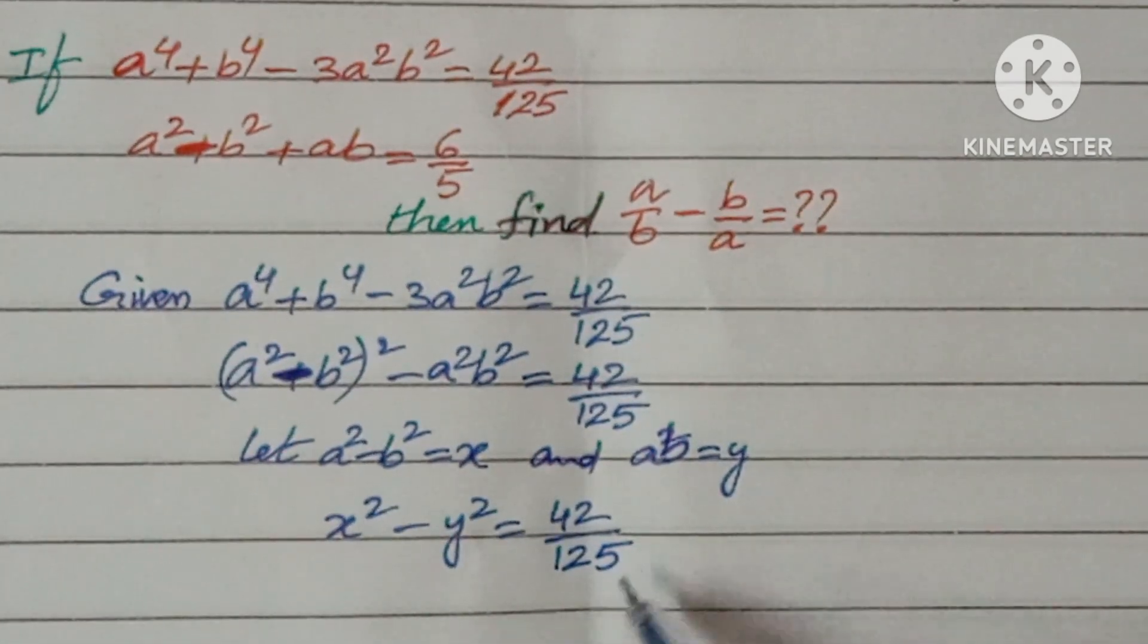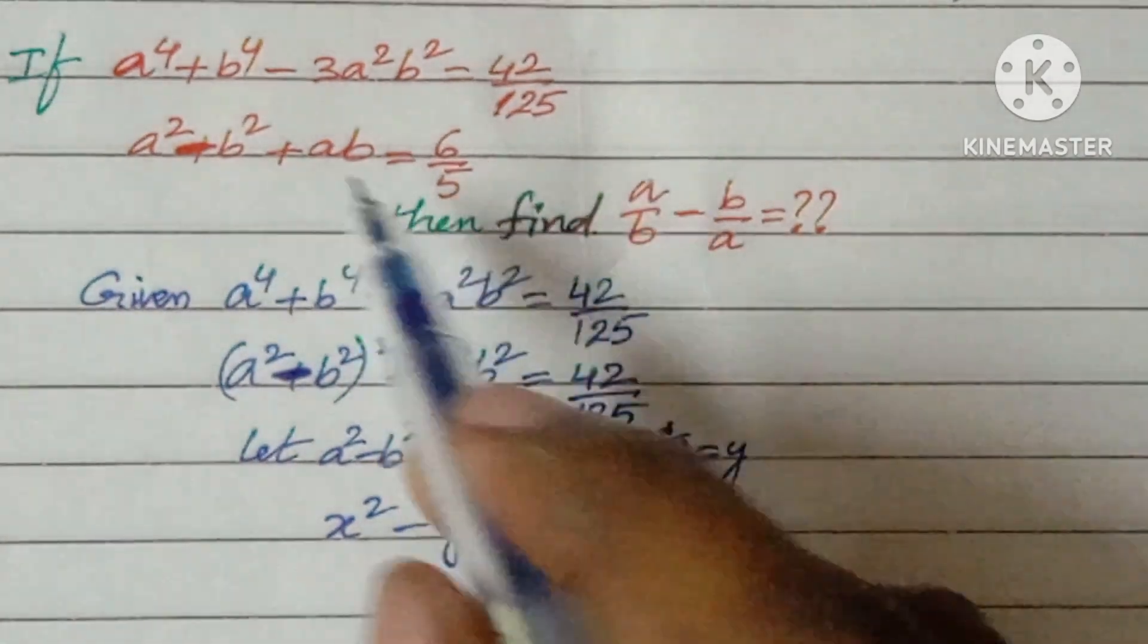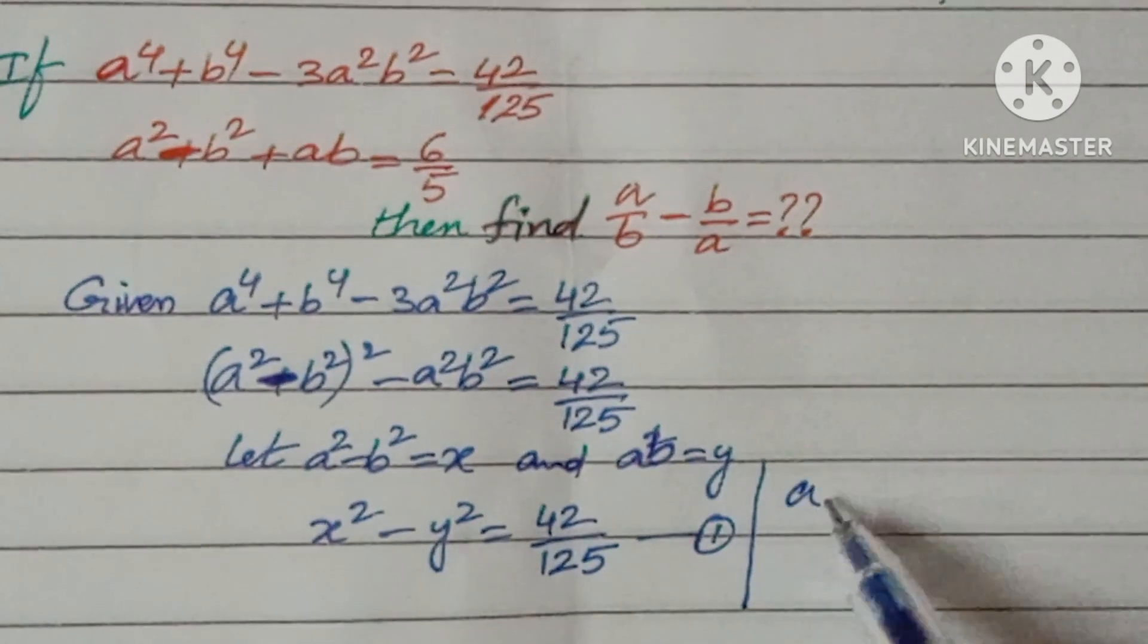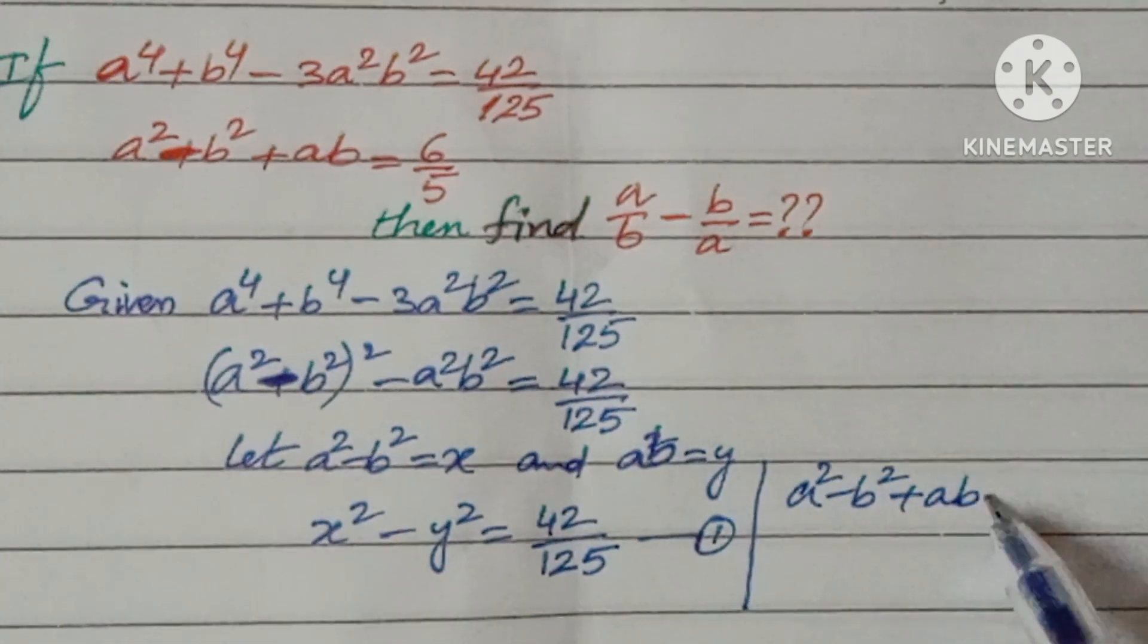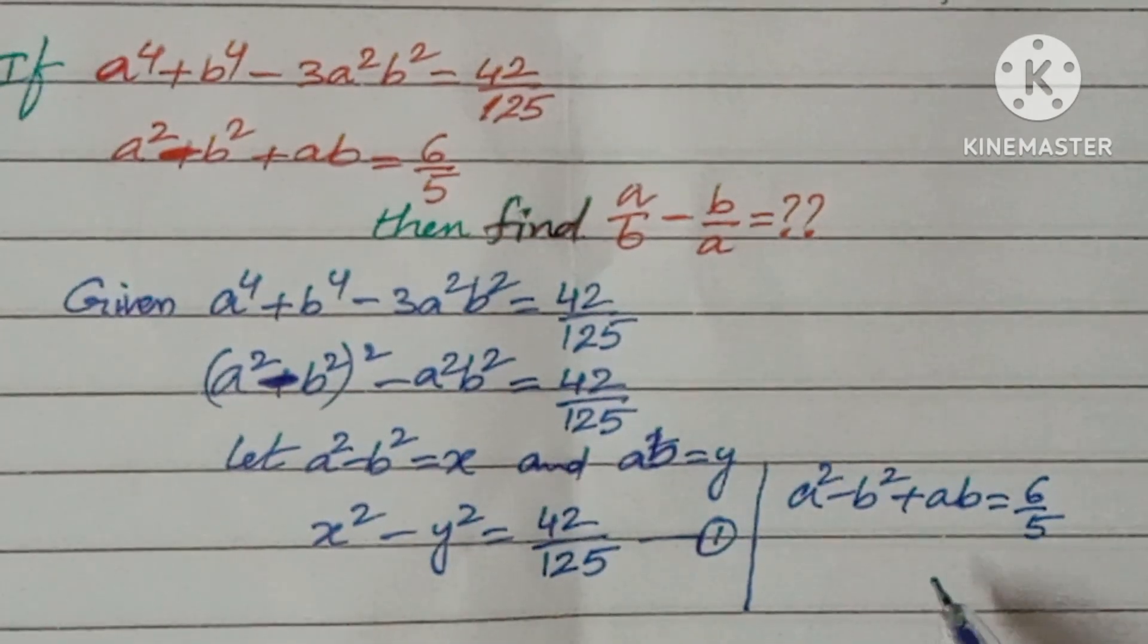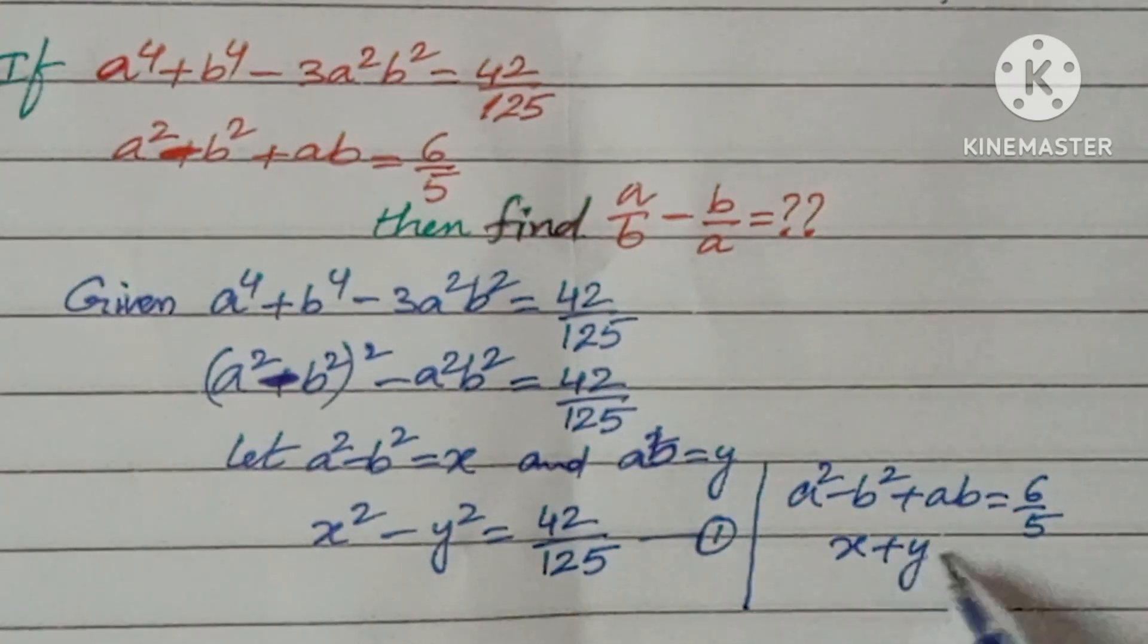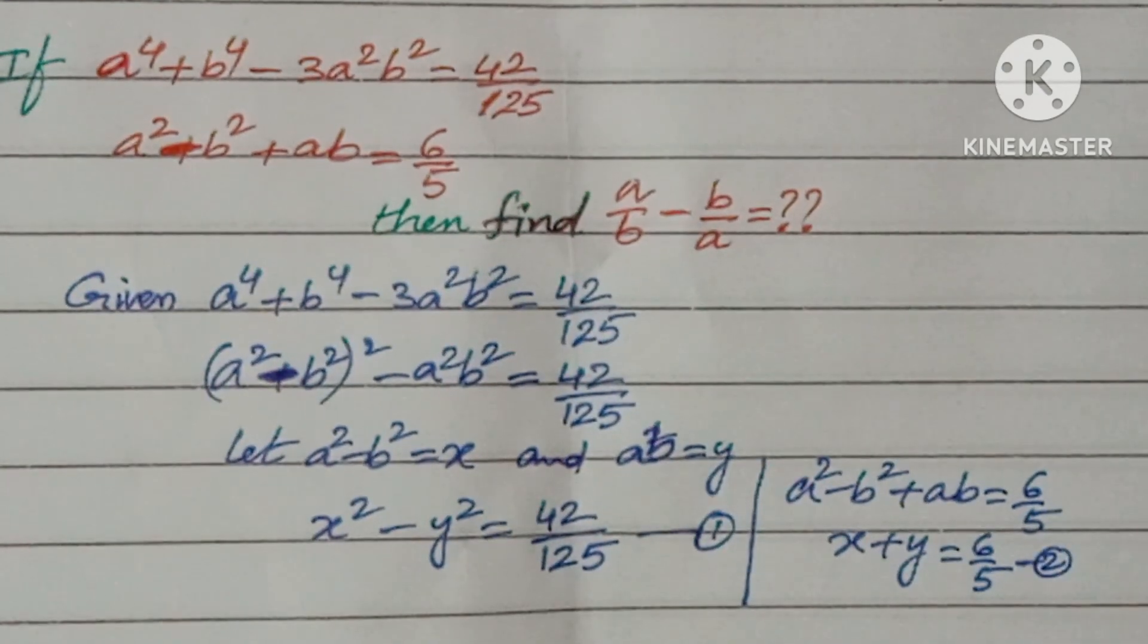Now, if the same value substitute in the second equation, what is the second equation here? A² - B² + AB = 6/5. So this can be written as x + y = 6/5. Let it be second one now.